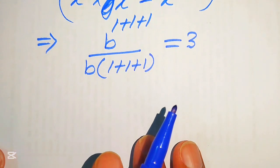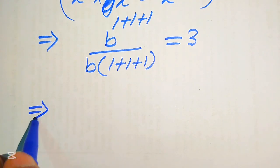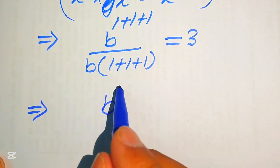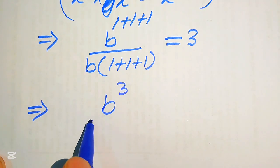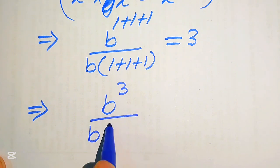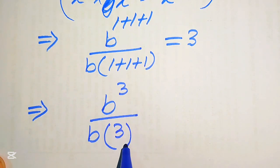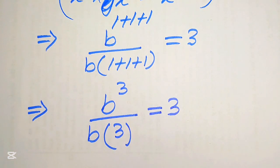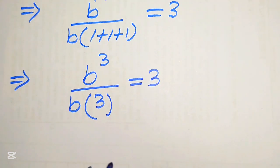In the next step, 1 plus 1 plus 1 becomes 3, so we have b to the power of 3 divided by b times 3, and this equals 3.